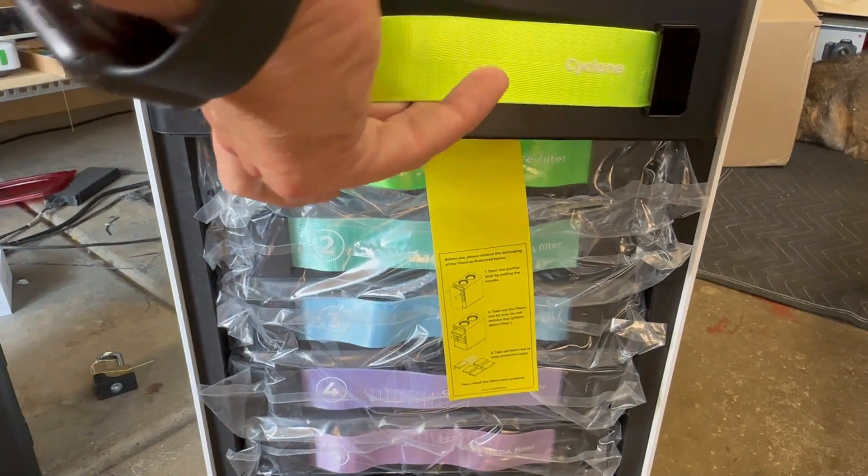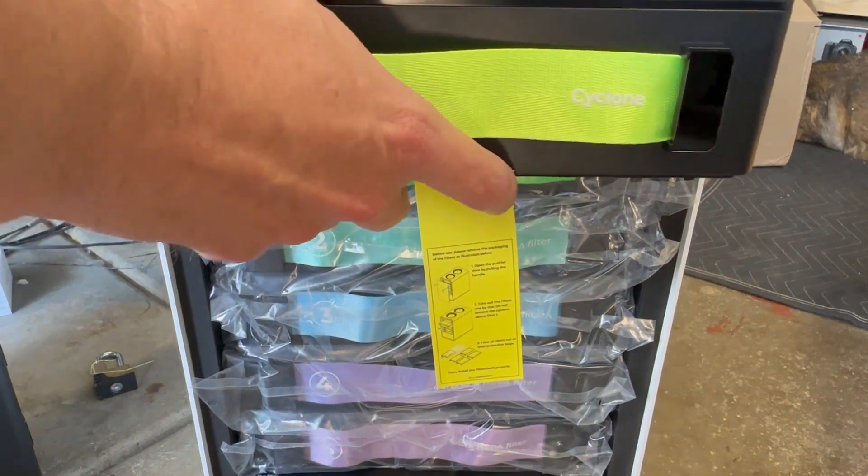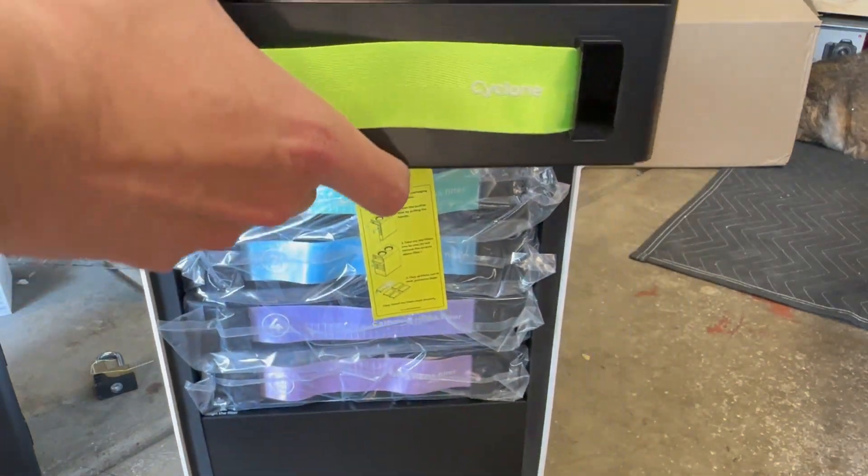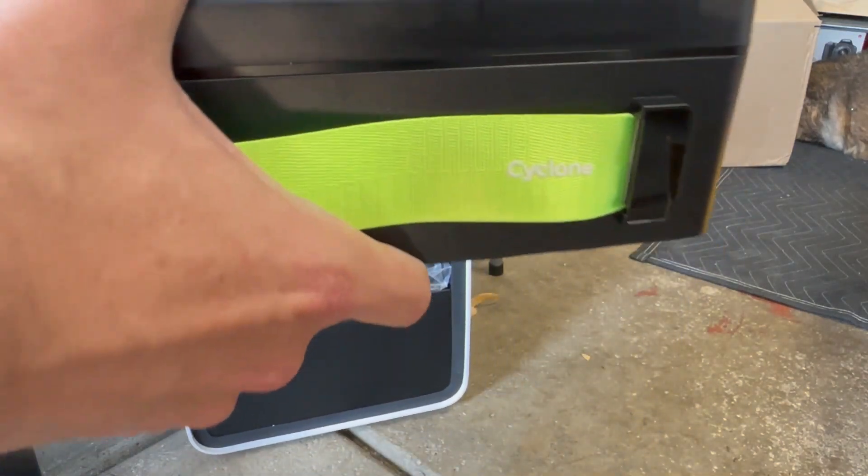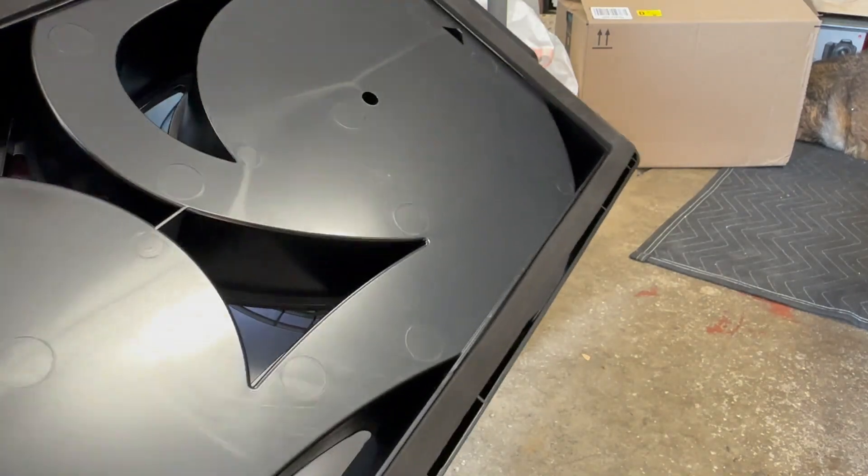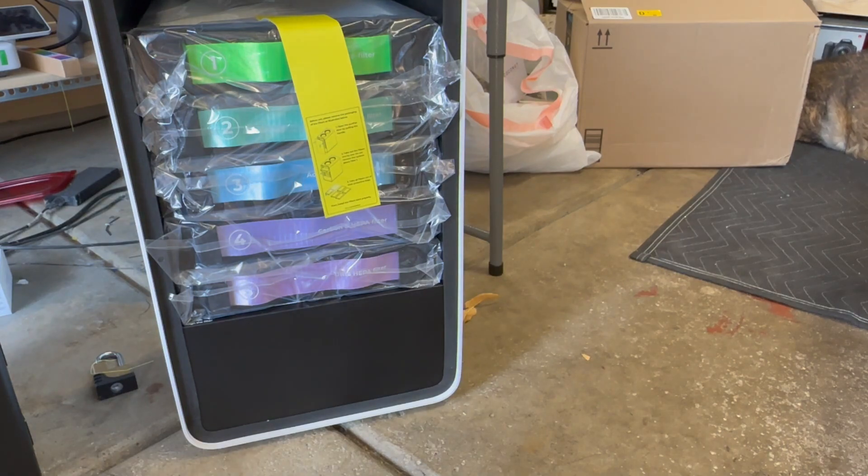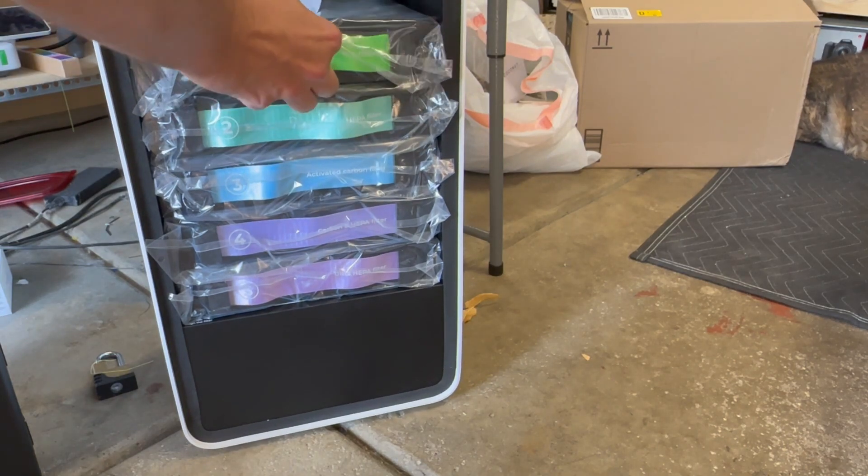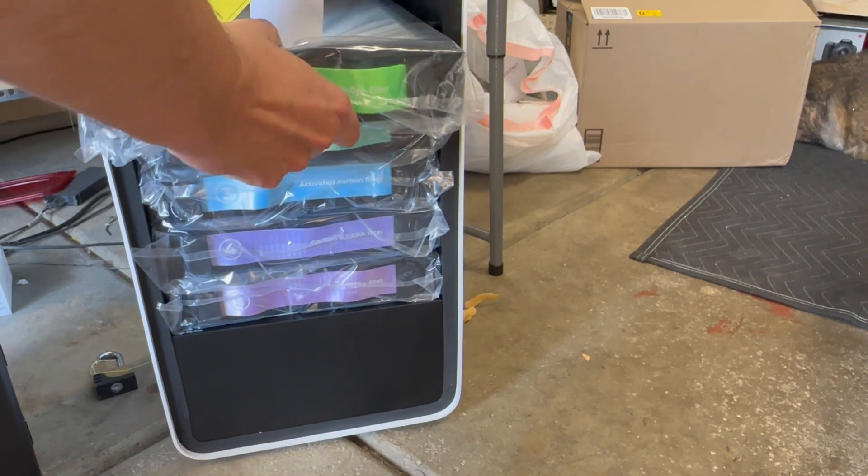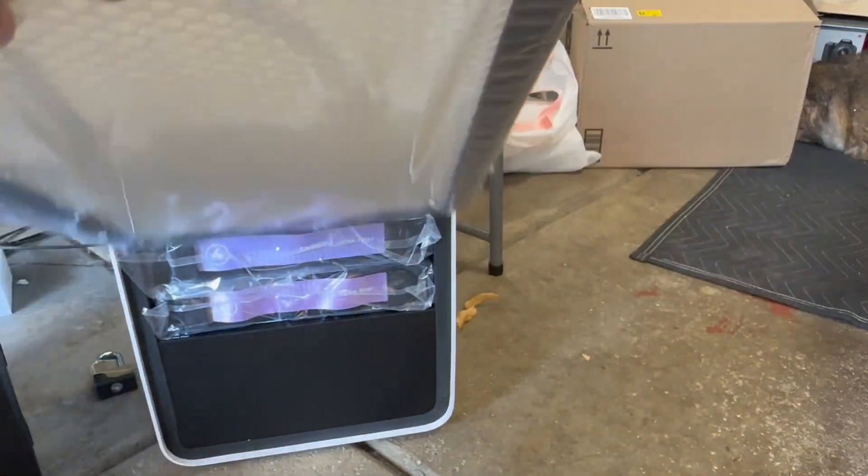Sometimes I just don't follow instructions very well, but I wanted to take a look at this cyclone really quick. Again, this is water washable. Unfortunately, you do have to remove screws that separate the panels, but it's good to see that this type of technology is now in place. You will have to remove each of these filters and the bag.